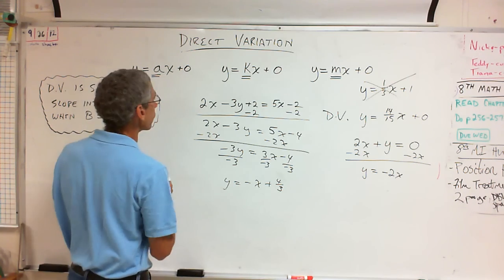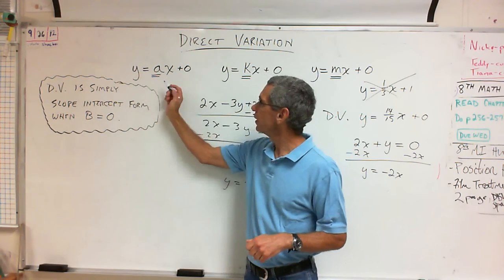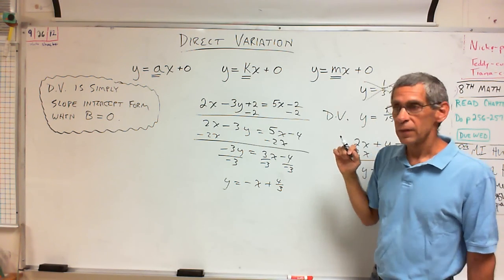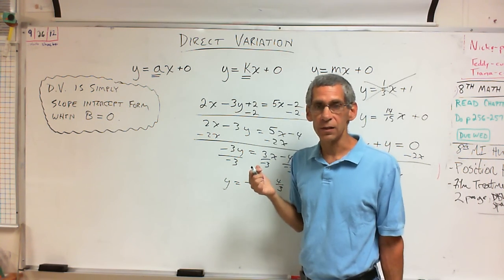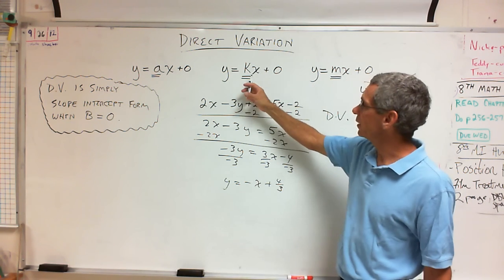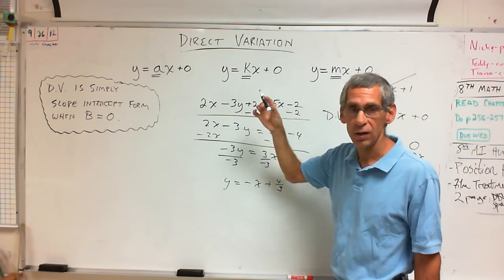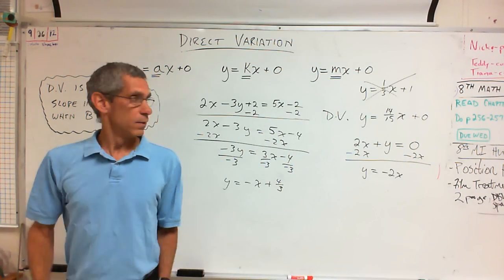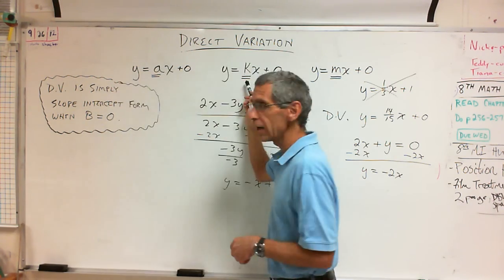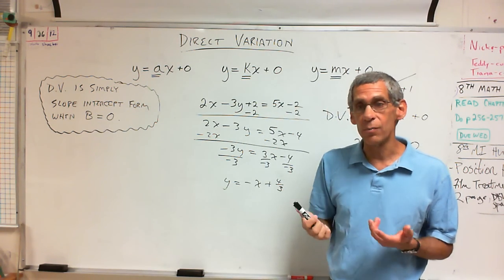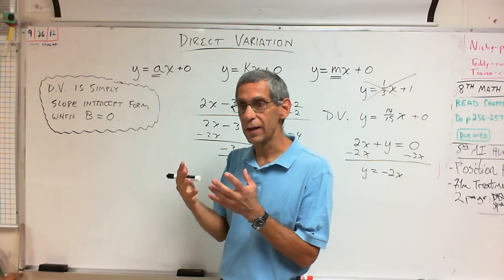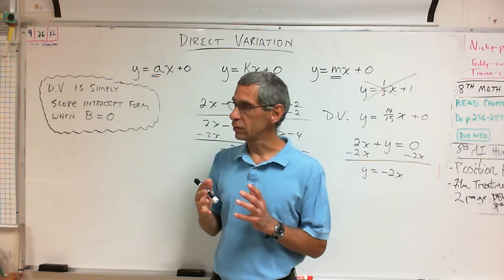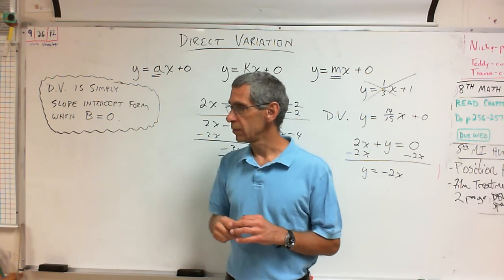That's how you tell with an equation whether it's a direct variation. Now, one thing I want to point out: this little letter — A, or K, or in my case M. They actually call that the constant of variation. K probably makes sense because constant starts with K. But I still like M better because I already know that formula. The constant of variation is a number, like Y equals 2X or Y equals 4X or Y equals one-third X.